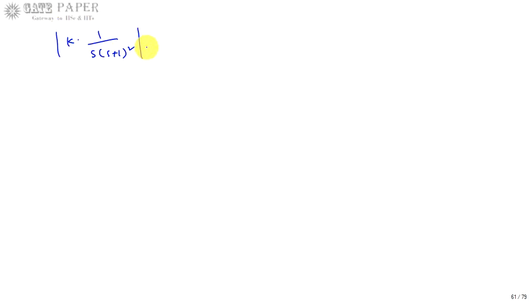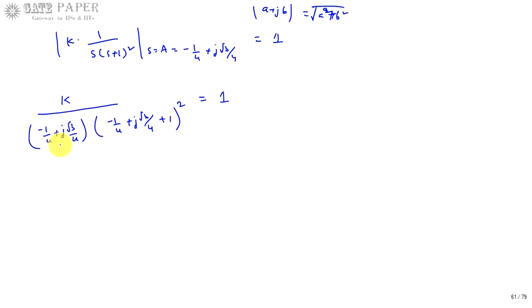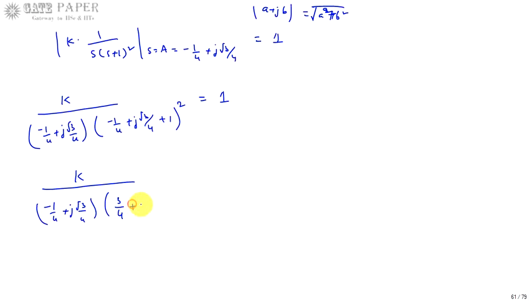Substituting A = −1/4 + j√3/4 into K · 1/[s·(s+1)²] = 1: the term s = −1/4 + j√3/4, and (s + 1) = 3/4 + j√3/4. We need the magnitude of s times (s+1)² equals 1/K, so we compute the magnitudes of each factor.